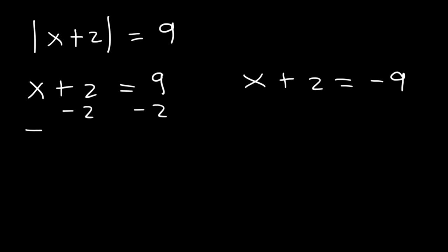So in the first one, we can see that x can be equal to 7, and for the second one, x is equal to negative 11. So these are the solutions.